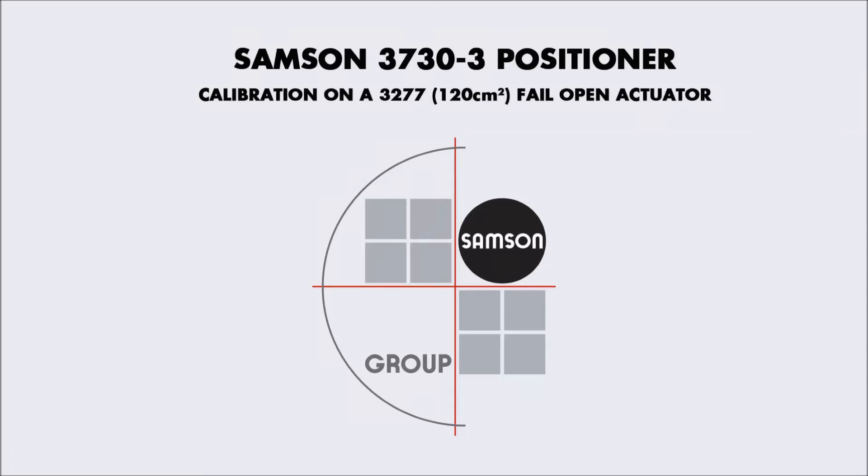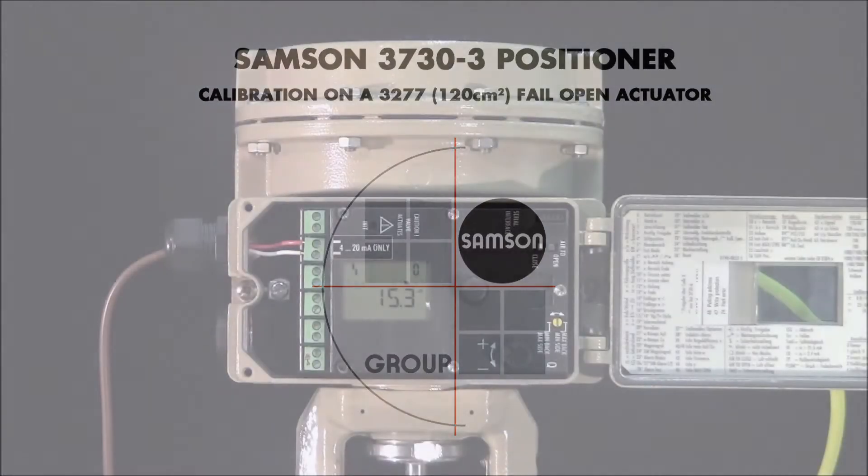In this short how-to video, we'll show you how to calibrate a 3730-3 positioner to a 3277 size 120 fail-open actuator. Detailed step-by-step instructions can also be found by following the link below.